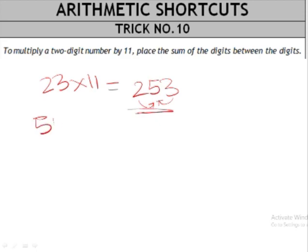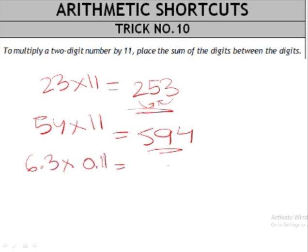Let's do another one. 54 times 11: write 5 and 4, and 5 plus 4 is 9, giving 594. For 6.3 times 0.11, treat it as 63 times 11: 6, 3, and their sum is 9.